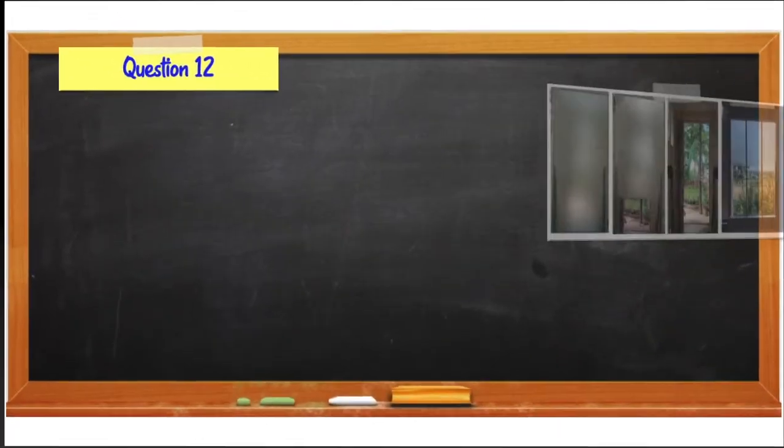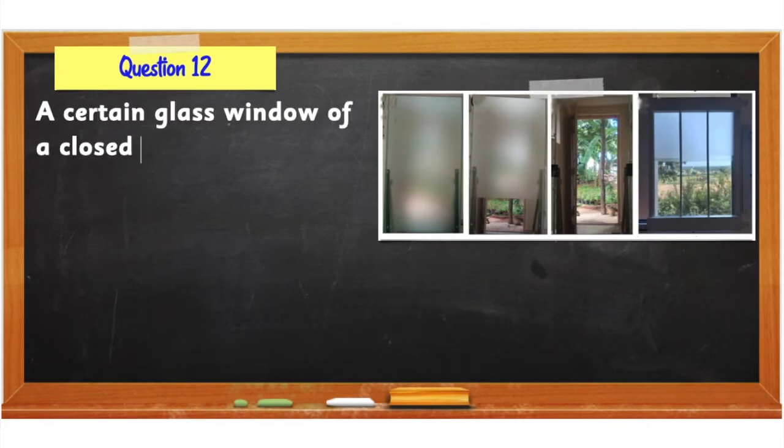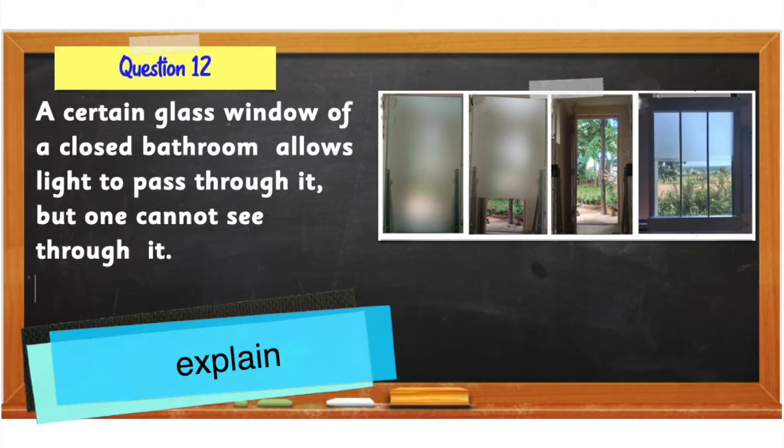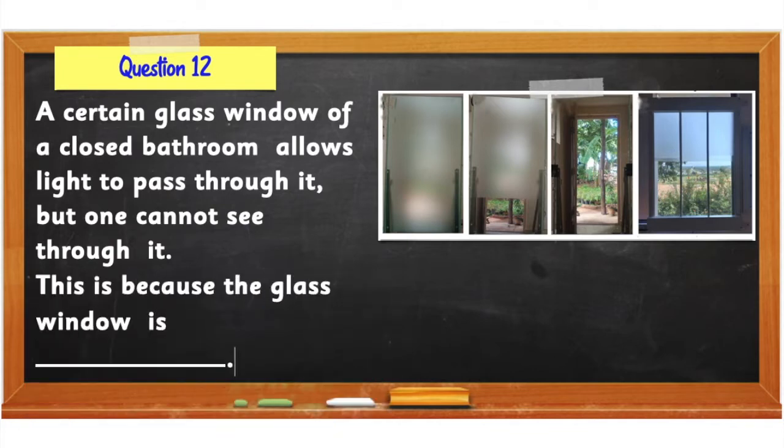Question number 12: A certain glass window of a closed bathroom allows light to pass through it, but one cannot see through it. Explain. This is because the glass window is translucent.